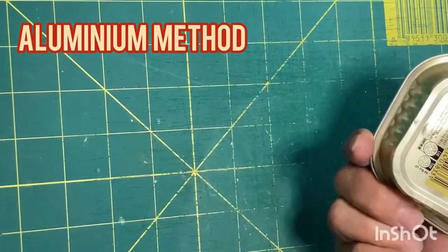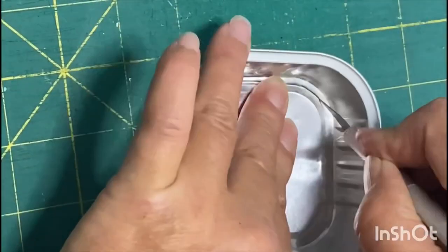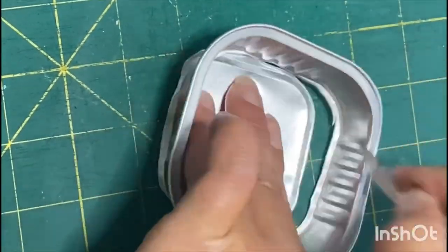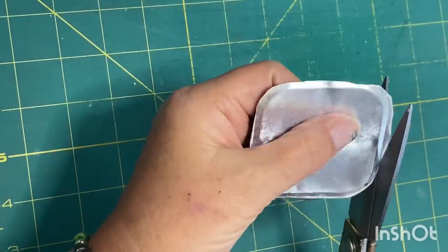I'm also using these aluminum trays that my cat food comes in for some of the metal plates.